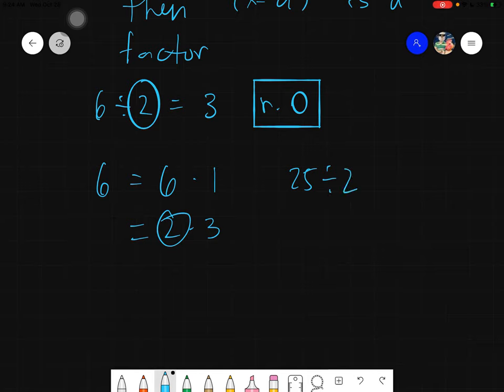For example, we have 25 divided by 2. The answer here is 12.5, or 12, and the remainder is 1 half. So 12 with the remainder of 1 half.